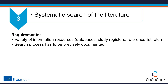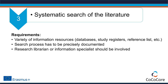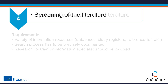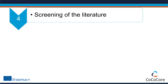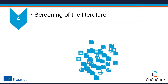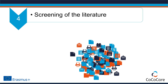Ideally, professional searchers such as research librarians or information specialists should be involved in developing and conducting the searches. A systematic literature search can never be 100% precise — in fact, it often retrieves thousands of irrelevant records, so someone has to go through all of these abstracts and find the few relevant ones.